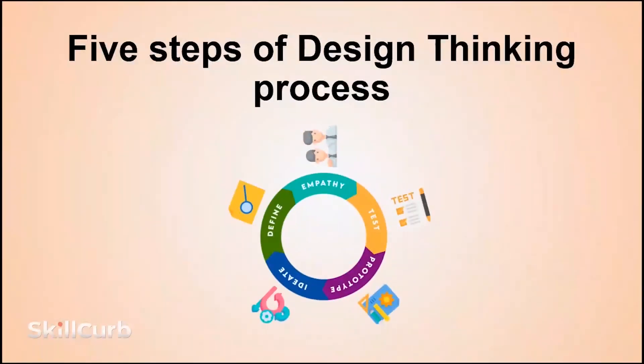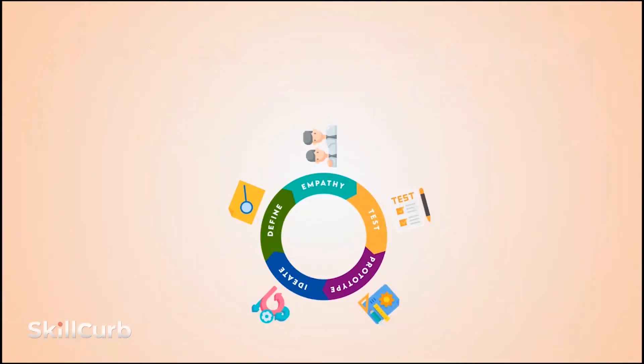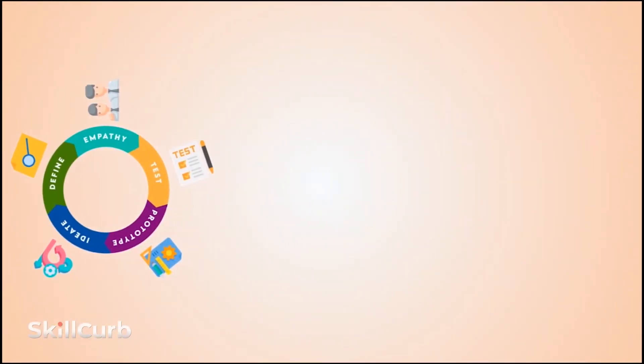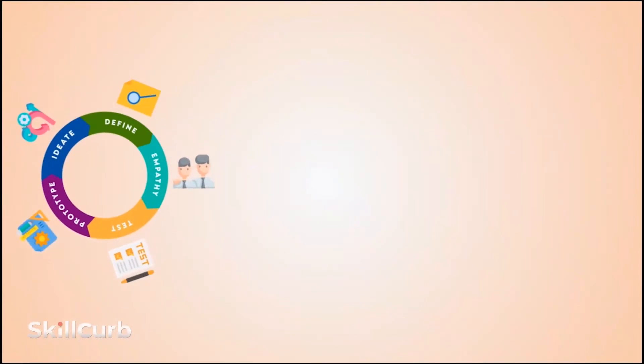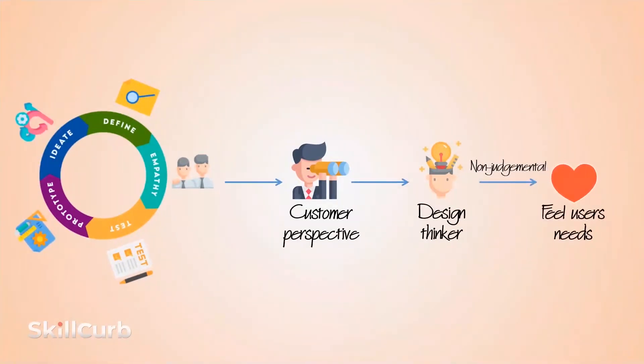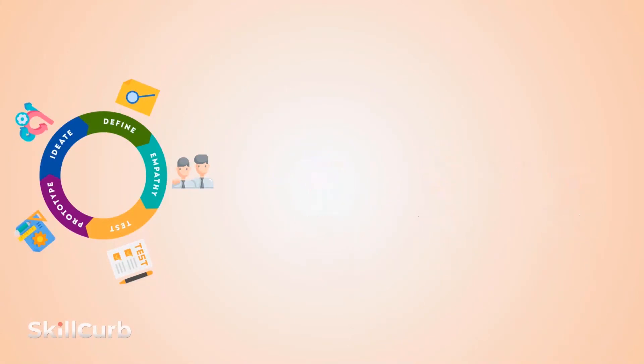The five steps of design thinking process involve empathy, define, ideate, prototype, and test. Empathy: The first stage is to understand the perspective of the target customer to identify and address the problem at hand. Design thinkers are encouraged to cast aside all assumptions and be less judgmental. Step into your users' shoes so you can feel and experience their day-to-day needs.